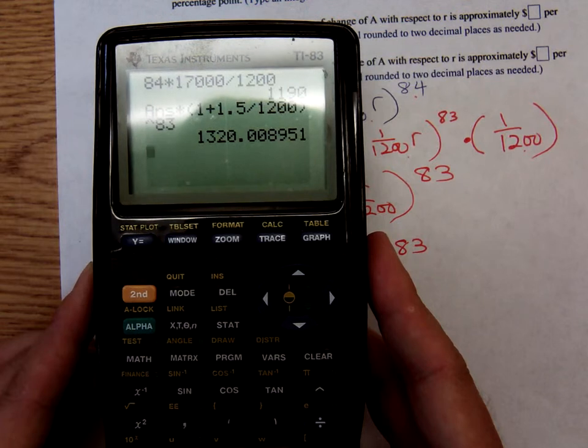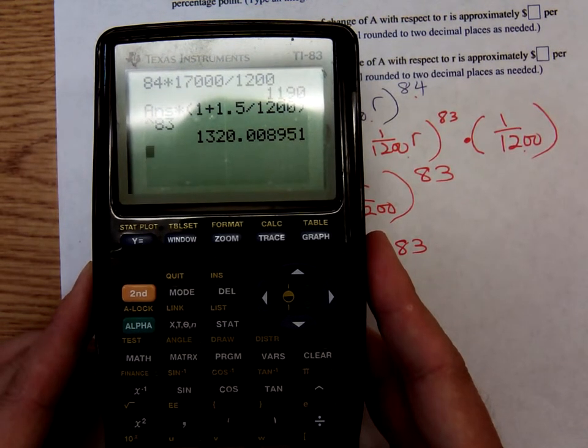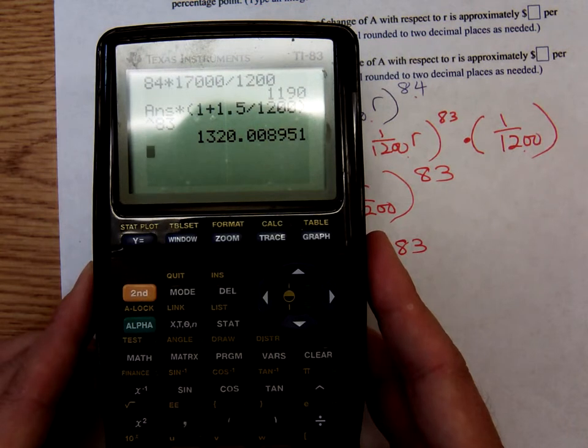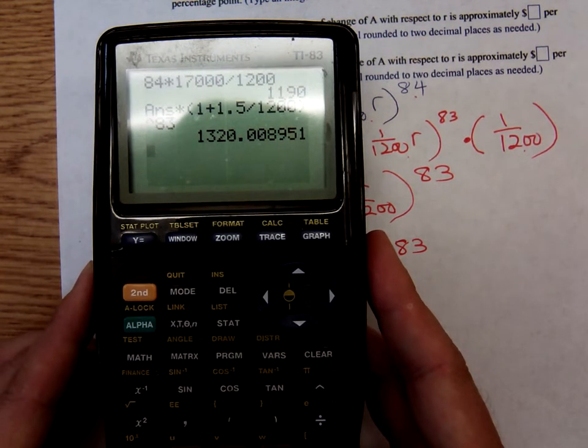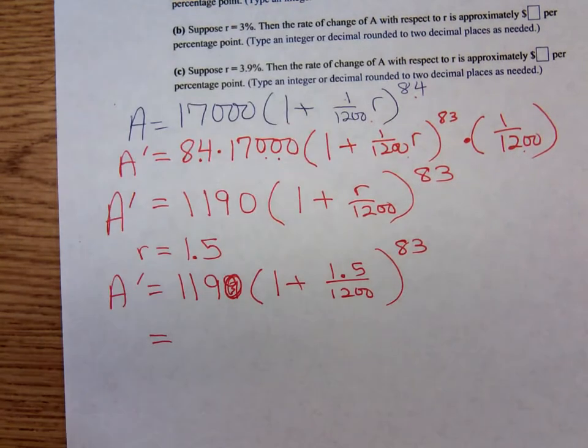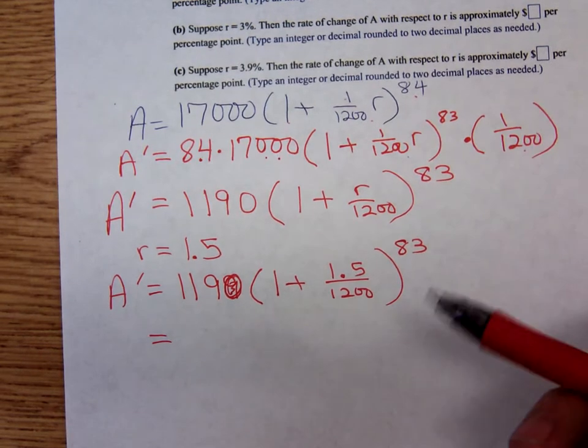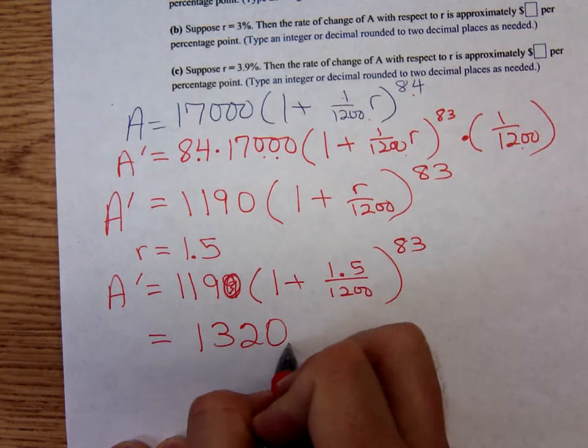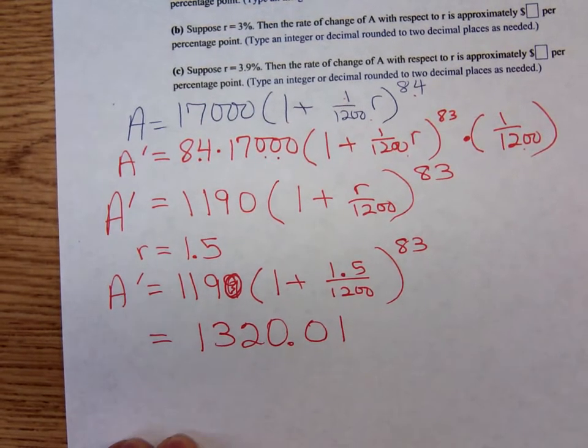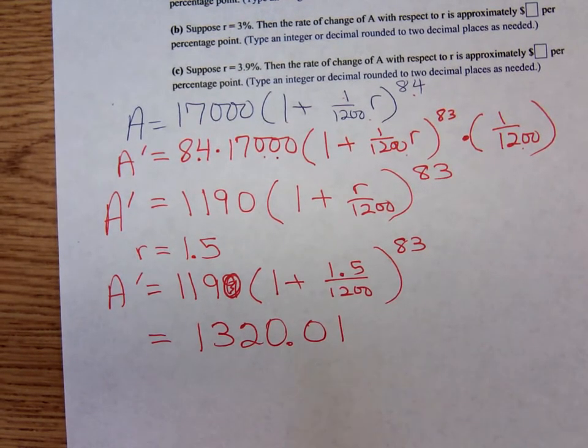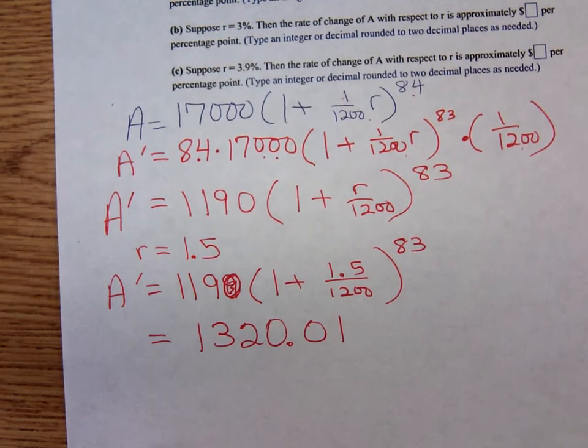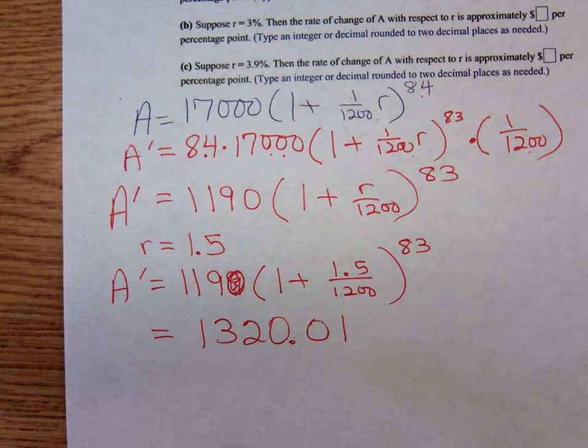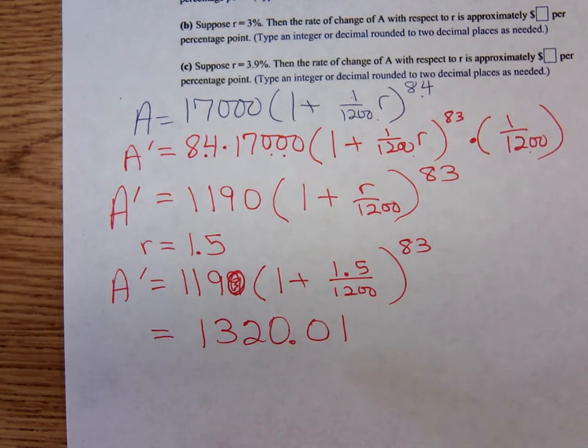What is that? One thousand three hundred twenty dollars, and if we're rounding to the cent it would be one cent. They want us to round it to two decimal places, so one thousand three hundred twenty dollars and one cent. Agree or disagree? Agree, okay.